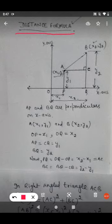Now let us consider two points, point A and point B. Coordinates of point A are x1, y1 and coordinates of point B are x2, y2. So we will calculate the distance between A and B, that is AB.